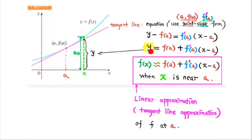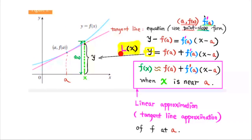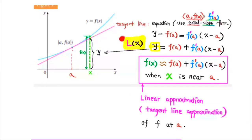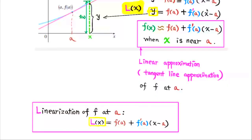Replacing y with function notation f(x), this is a function whose graph is the tangent line. This linear function, equal to f(a) plus f'(a) times the quantity x minus a, is called the linearization of the function f at a.